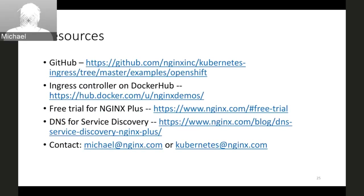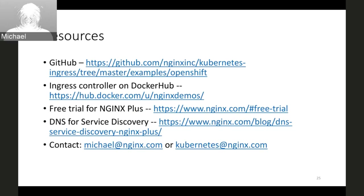With that I conclude my presentation. Here are a couple of resources you will find useful: all the YAML files as well as the Ingress controller can be downloaded from GitHub by following the link on screen. There is also an Ingress controller container image available on Docker Hub. If you would like to try NGINX Plus, it is easy to get a free trial — just go to the website and fill out the form. For DNS service discovery with NGINX Plus on OpenShift, follow the blog post link. My email is available if you'd like to contact me.